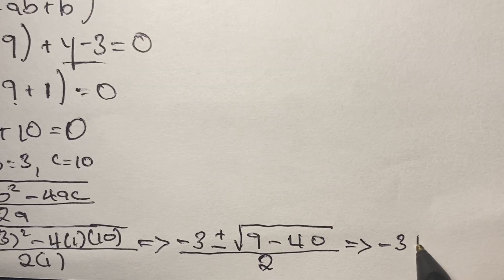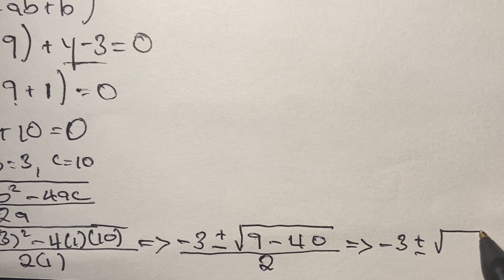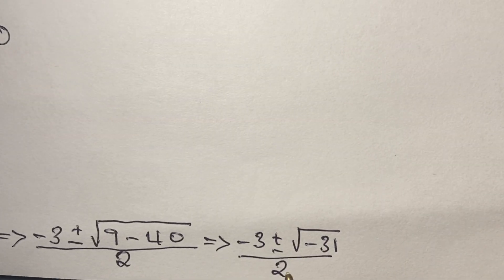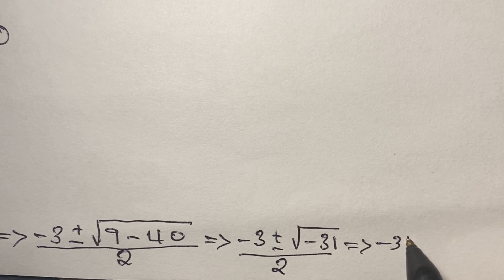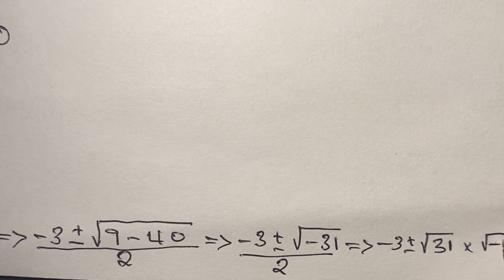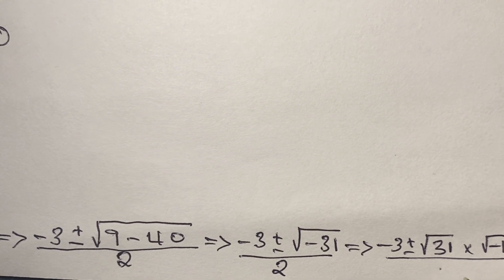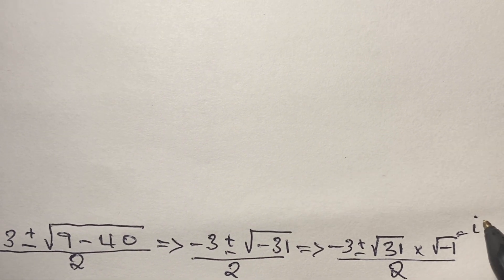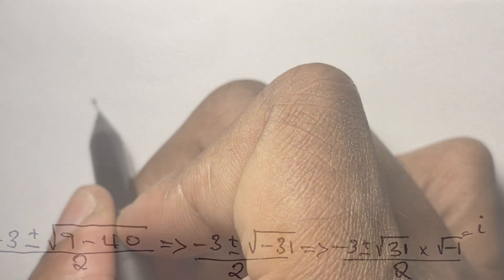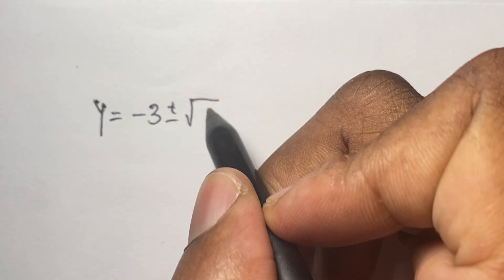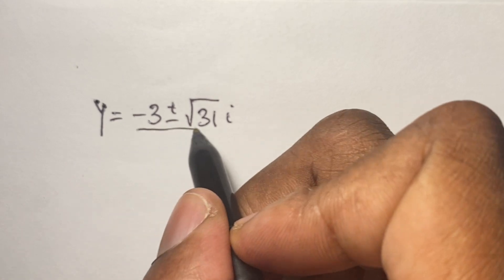We have negative 3 plus or minus the square root of negative 31, all over 2. Since the square root of negative 1 is the imaginary number i, we can write this as negative 3 plus or minus the square root of 31 times i, divided by 2.